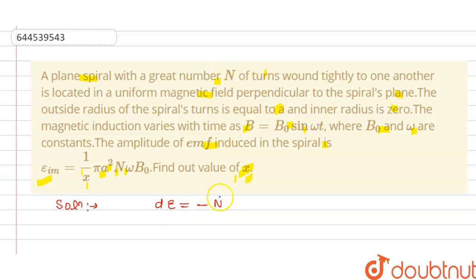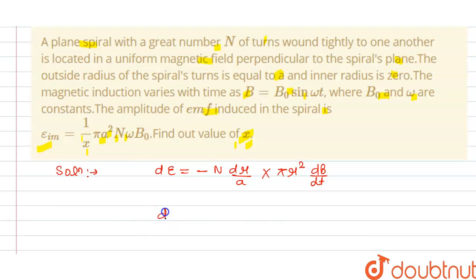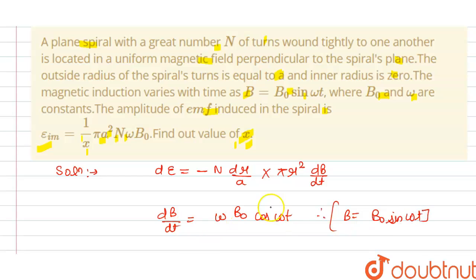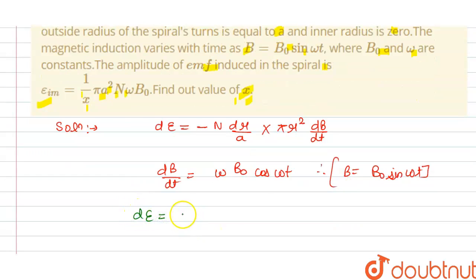The solution: we know that the differential EMF equals minus n times (dr/a) times the area πr², multiplied by the rate of change of magnetic field dB/dt. We know that dB/dt equals ωB₀cos(ωt), since B = B₀sin(ωt), and differentiating gives ωB₀cos(ωt).